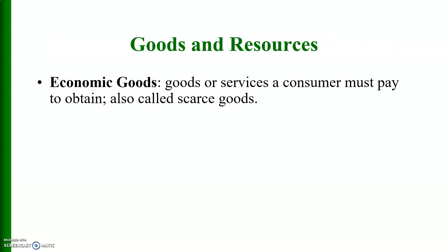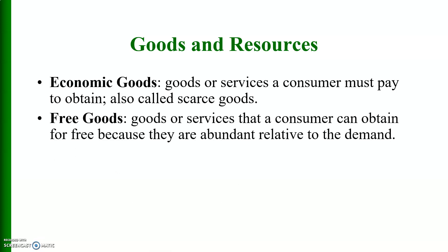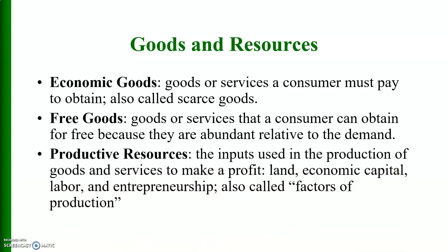Goods and services: economic goods are services a consumer must pay to obtain, also called scarce goods. Free goods are goods or services that a consumer can obtain for free because they are abundant relative to demand. Productive resources are the inputs used in the production of goods and services to make a profit — land, economic capital, labor, and entrepreneurship — also called factors of production.